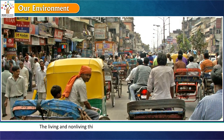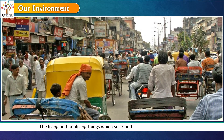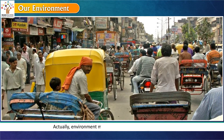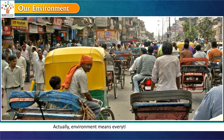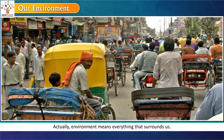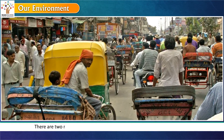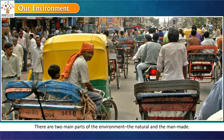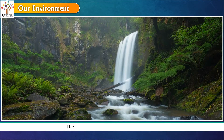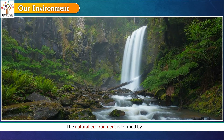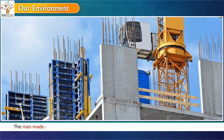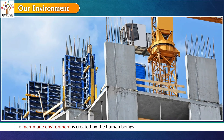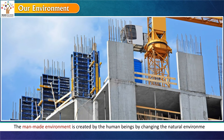The living and non-living things which surround us form our environment. Environment means everything that surrounds us. There are two main parts of the environment: the natural and the man-made. The natural environment is formed by nature. The man-made environment is created by human beings by changing the natural environment.